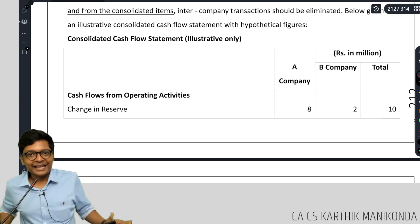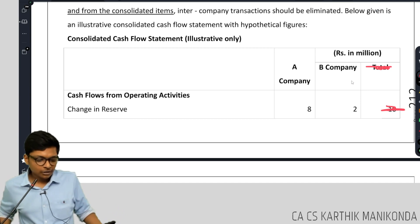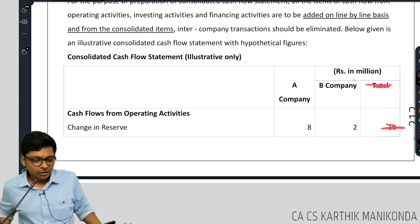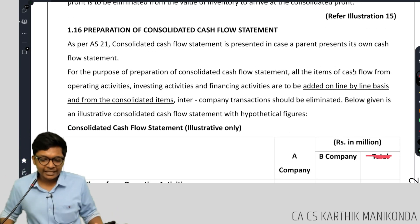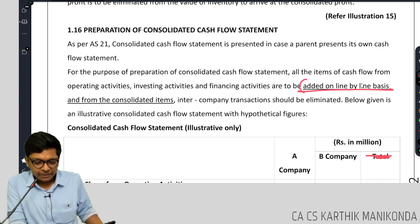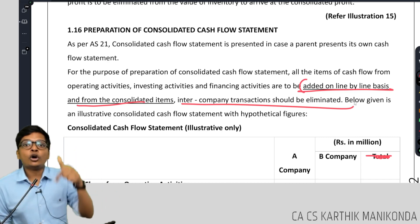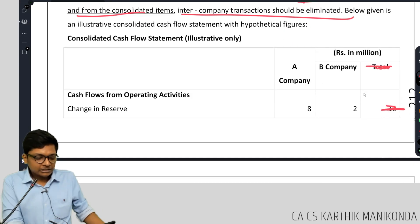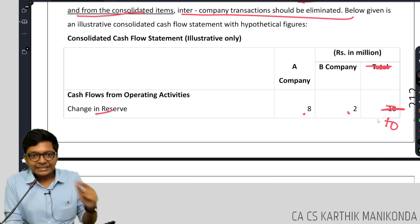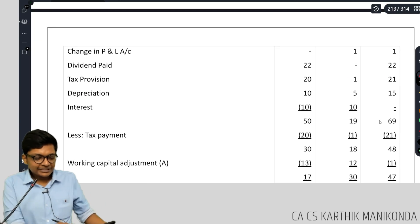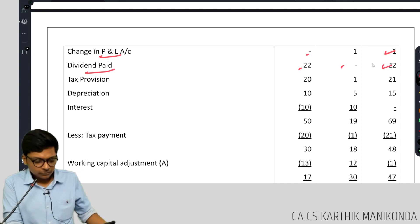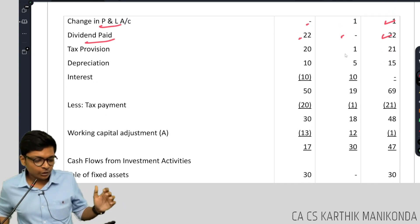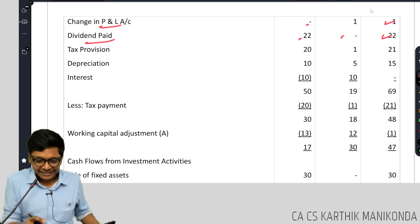They gave with the answer guys, they gave total column. So can you see guys, preparation of consolidated cash flow, it should be added on line by line basis and intercompany should be netted out. That 80, you will knock off, that's it. Now look at this. Change in reserve 8 and 2, this will become 10. Come here, change in P&L, 0 and 1, this will become 1. Dividend paid 22, 0. Are you seeing guys, can you see what they are doing? They are adding two columns, this is the answer.